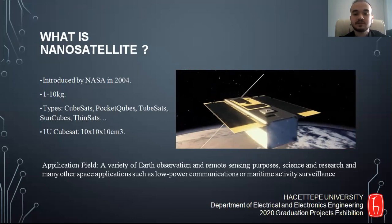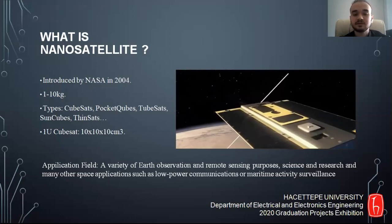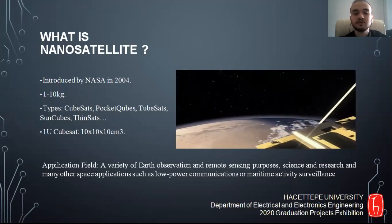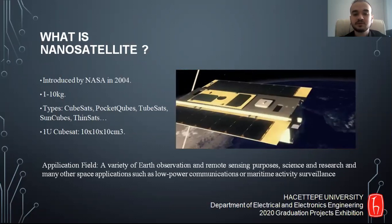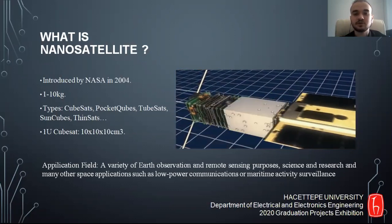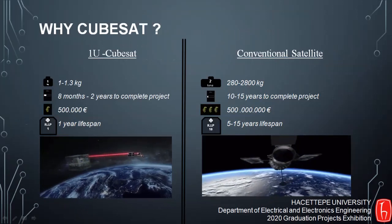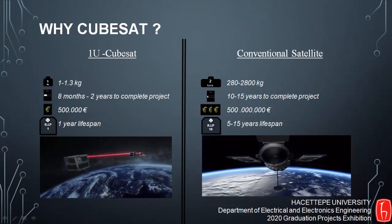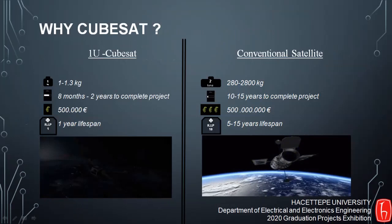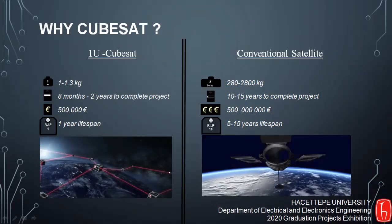CubeSat is a type of miniaturized satellite with dimensions in centimeter cubic units, where U denotes the number of cubes. CubeSats can be used for a variety of earth observations, science and research purposes. The differences between conventional satellites and CubeSats are mass, size, cost, functions, lifespan, and production process.